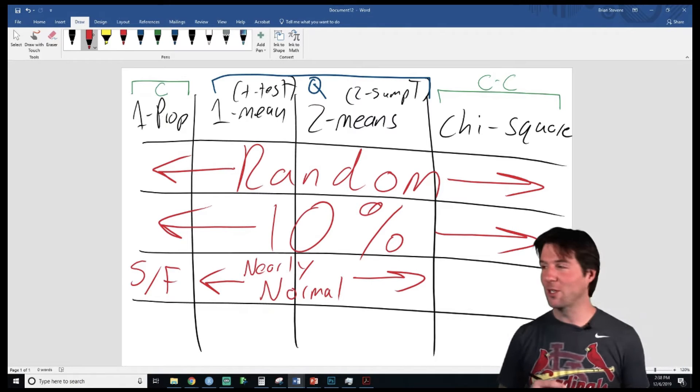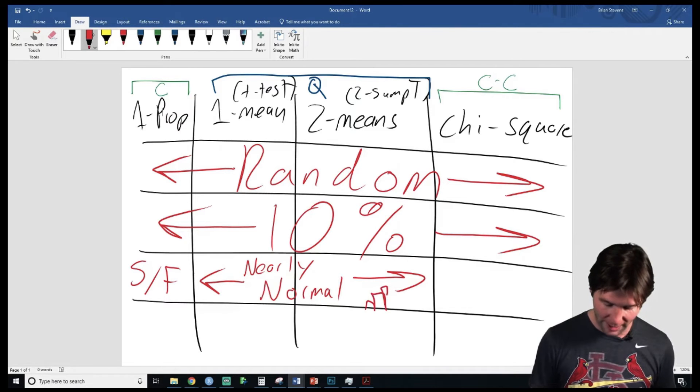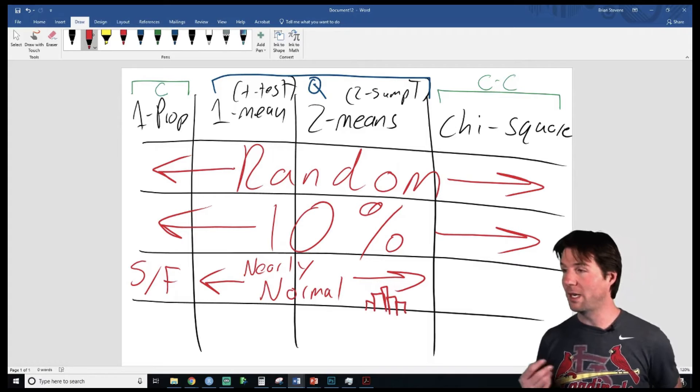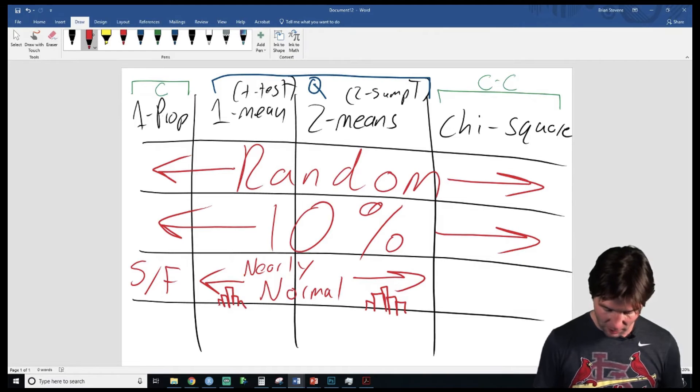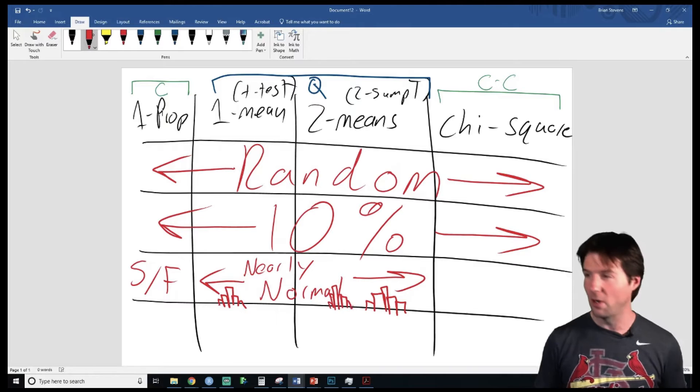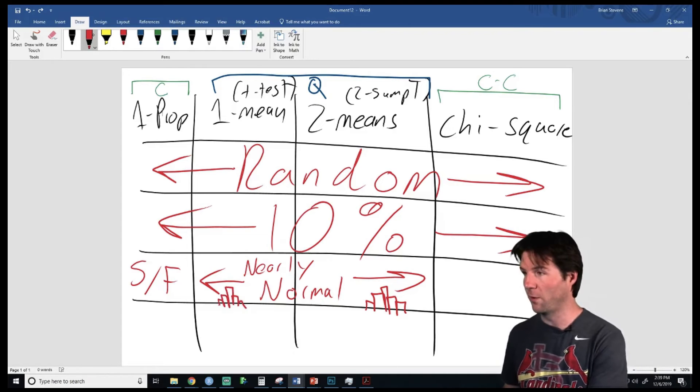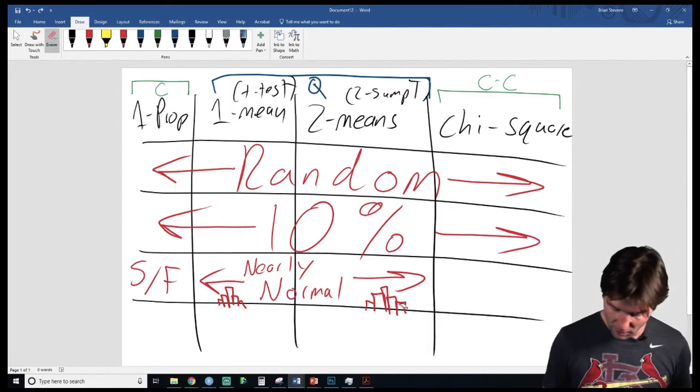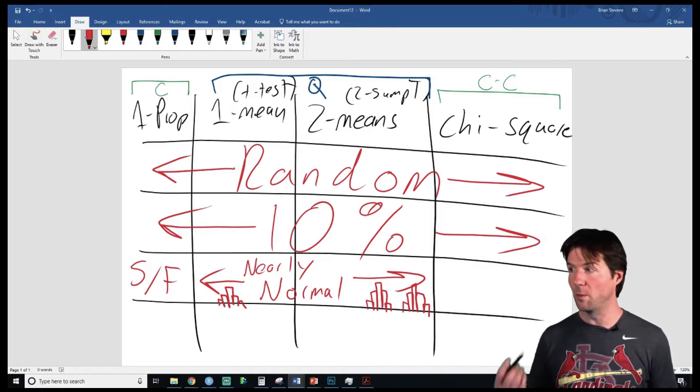The third condition is nearly normal for quantitative data, and that's when we draw out a histogram. We look to see if the histogram is nearly normal. We'd get a histogram from both of these. When we do the two sample, we get two histograms - a histogram for both groups. We need to see that the histograms are nearly normal. That is our goal. We get two histograms for this test on nearly normal. When you do the two sample t, you want to get two histograms. You're going to look at both distributions to see if both distributions are nearly normal.